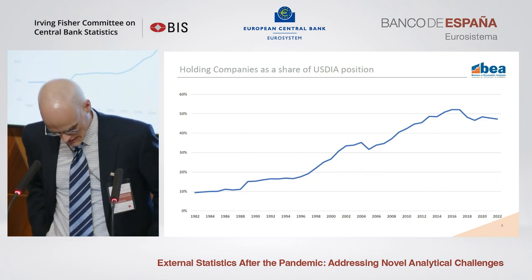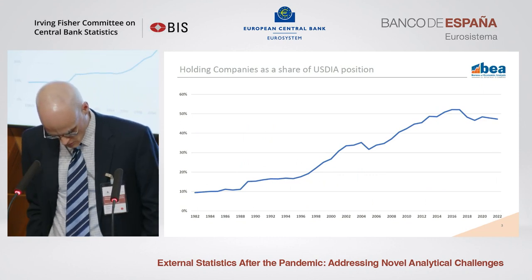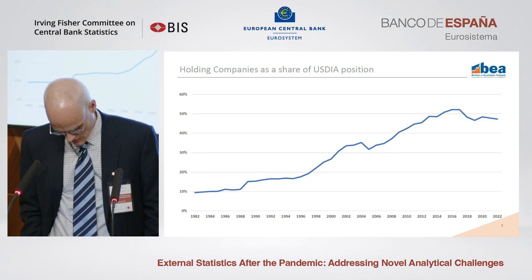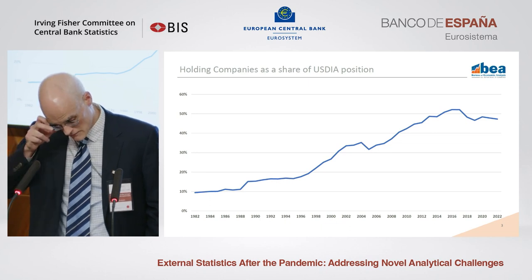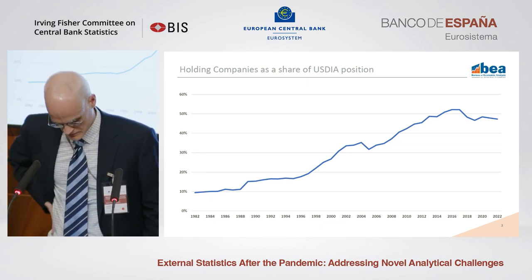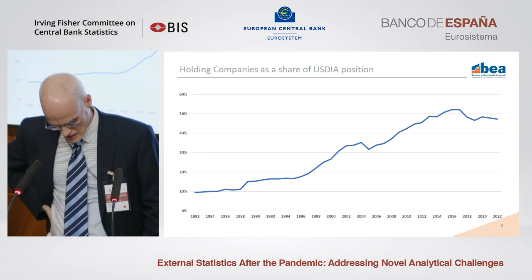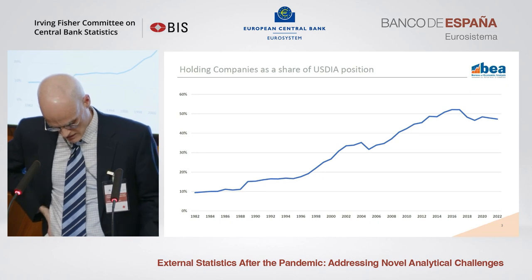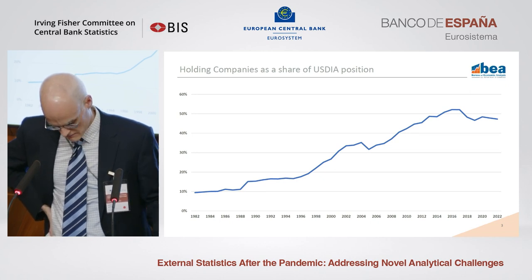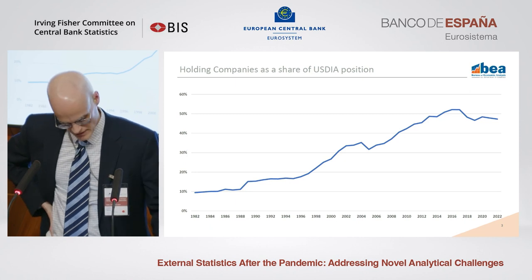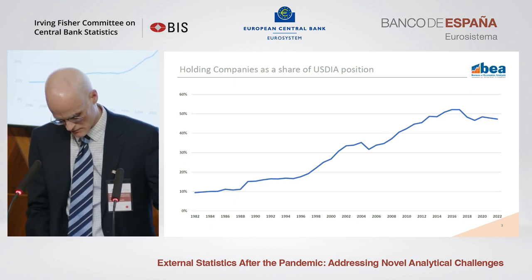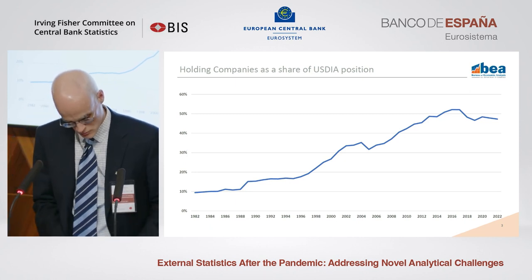In 1982, holding companies accounted for less than 10% of the U.S. direct investment position abroad. By 2017, they reached a peak of 52% and still account for 47% of the position as of 2022.